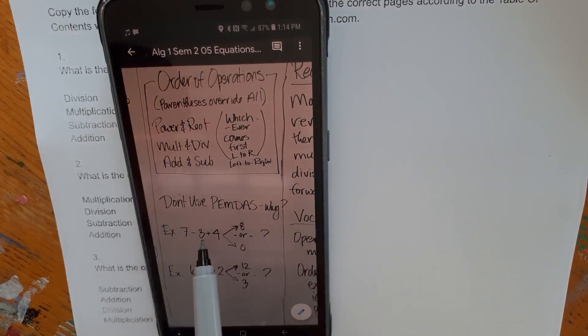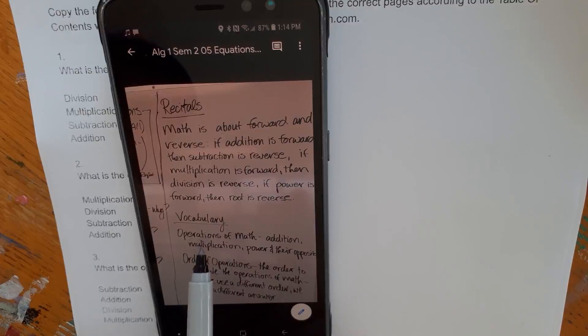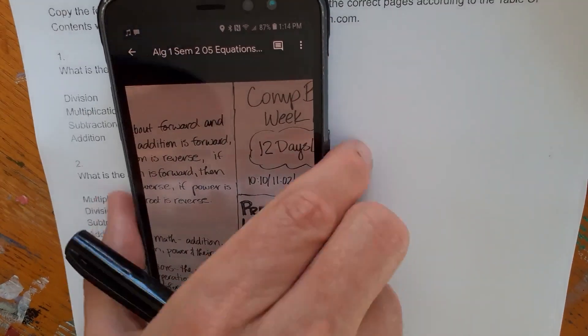PEMDAS, here's a problem. Seven minus three plus four. Is it eight or zero? And you can write it down and do it later. Do it in your comp book. Six divided by one times two. Is it 12 or three? So let's see. Vocabulary, order of operations, operations of math, and their opposites.